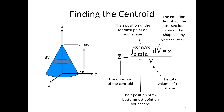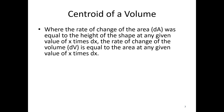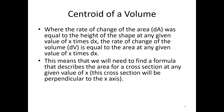So let's talk about this dV term. Whereas the rate of change of area dA in our 2D integration was equal to the height of the shape at any given value of x, or the width of the shape at any given value of y, here we are looking at dV. The dV is going to be the rate of change of the volume, and it's going to be equal to the area of a cross-section at any given value of x, y, or z. So we need to find a formula that describes the area for the cross-section at any given x, y, or z value.